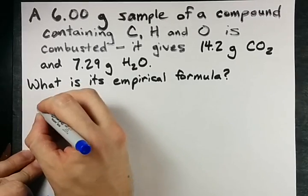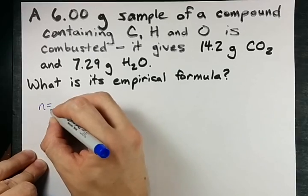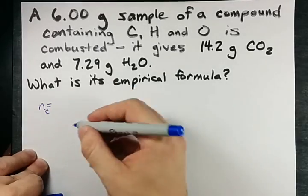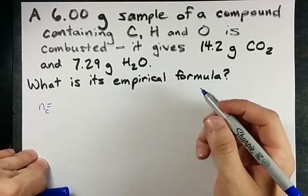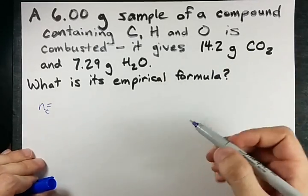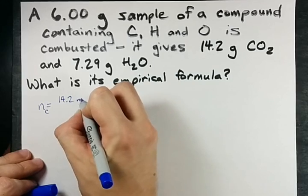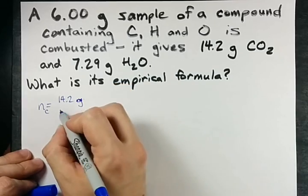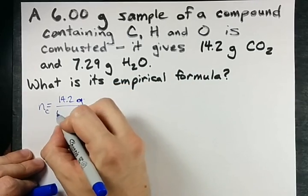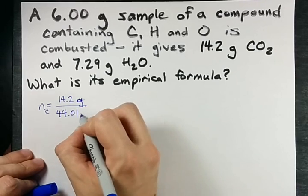The number of moles of carbon is the same as the number of moles of carbon dioxide because there's only one carbon atom in each carbon dioxide. So to figure out that number of moles, it's 14.2 grams, the mass divided by the molar mass of carbon dioxide, 44.01 grams per mole.